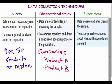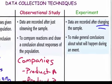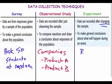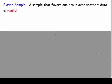An experiment involves a control group — you change something and actually experiment with it. It says data is recorded after changing the sample. This happens a lot in science. For example, testing how sugar affects the body: scientists might give rat one sugar and rat two no sugar, then see how it affects the one with sugar compared to the one without. That would be an experiment.